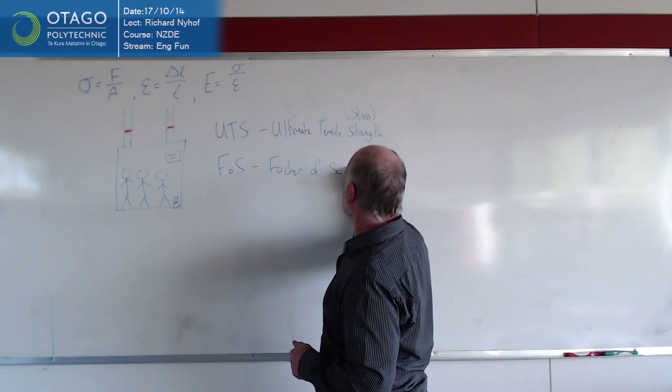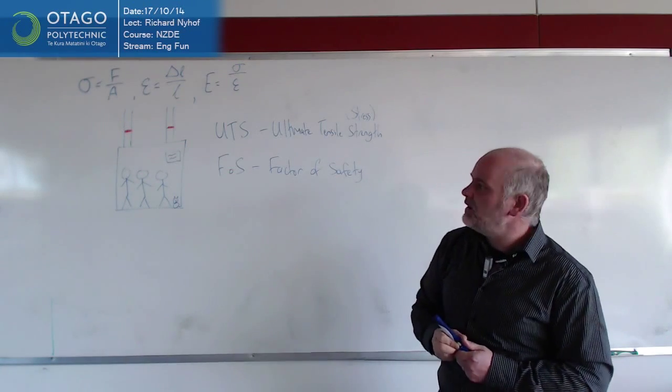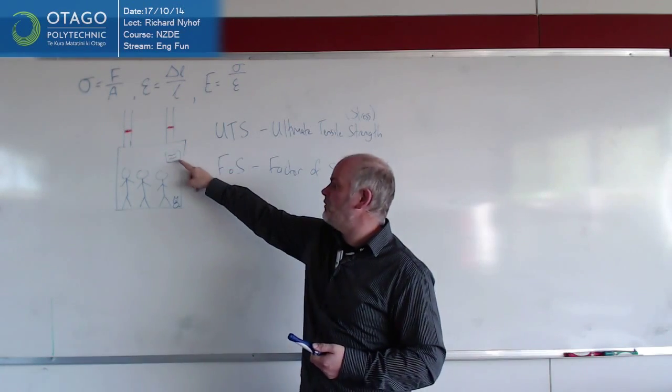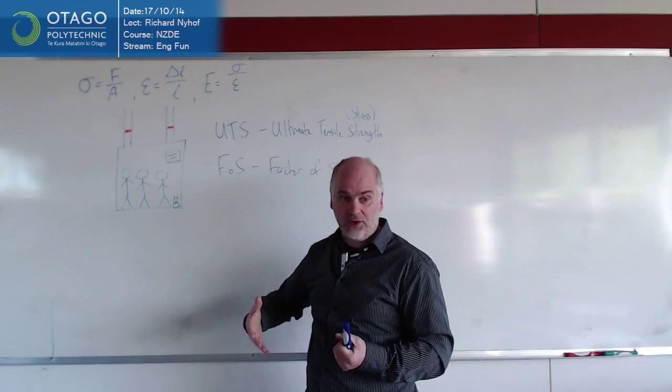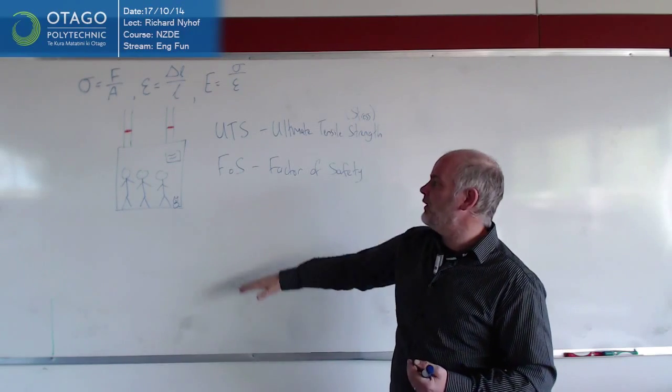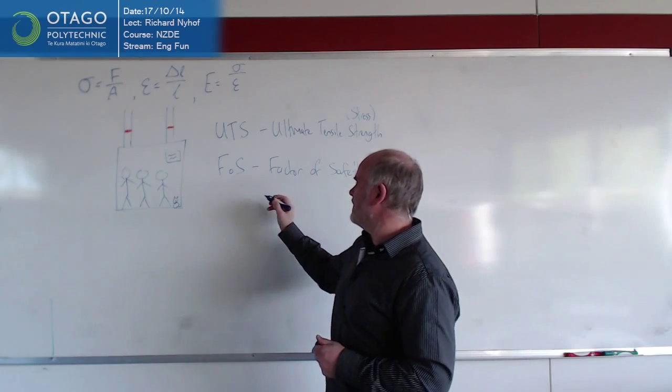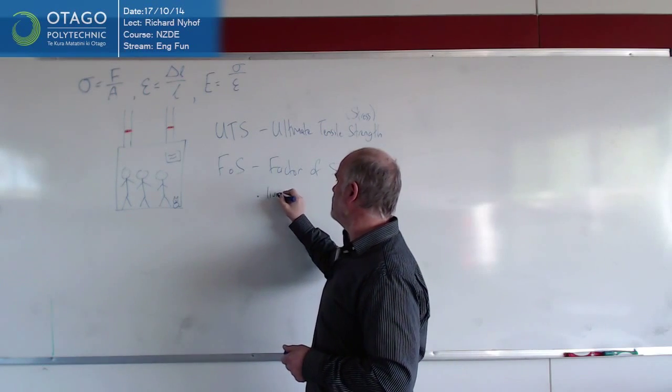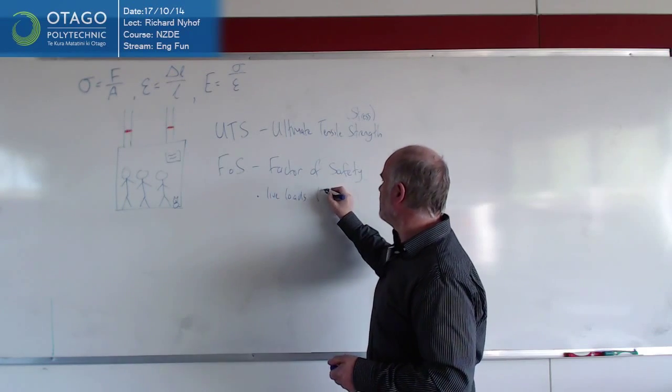What happens is when the calculations are done, the engineers know what the ultimate tensile stress is, so they know how much the lift cables can theoretically hold, and then they go, we're not going to load it up that much, we're only going to load it up this portion of it. Typically a factor of safety for live loads, so lifts, things with people in it, is often around about five.